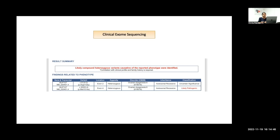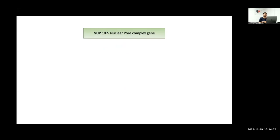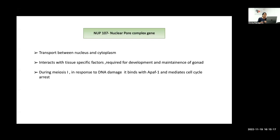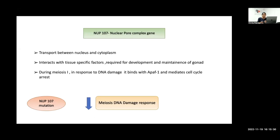Genetic testing revealed a mutation in NUP107, which is associated with ovarian dysgenesis. NUP107 is a nucleopore complex gene that interacts with tissue-specific factors and is required for the development and maintenance of the gonads. During meiosis I, in response to DNA damage, it binds with APOF1 and mediates cell cycle arrest. When there is a mutation in NUP107, the meiosis DNA damage response decreases and leads to oocyte death — this is the basic pathophysiology.